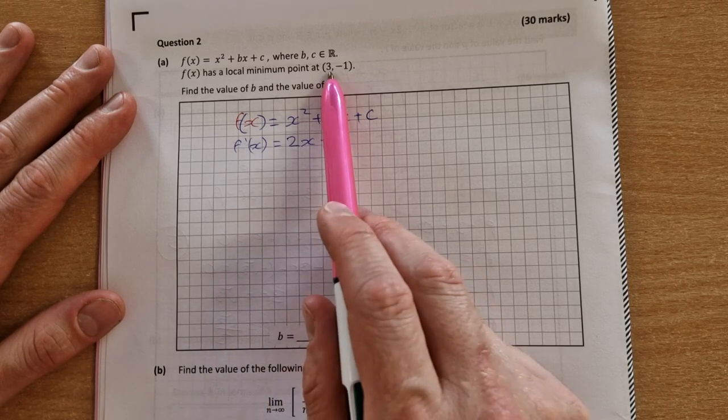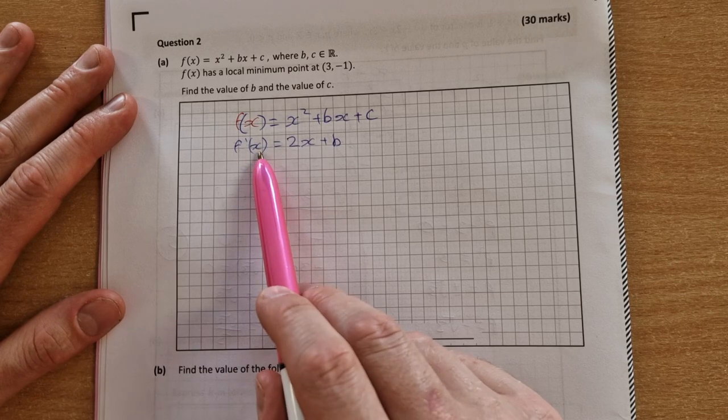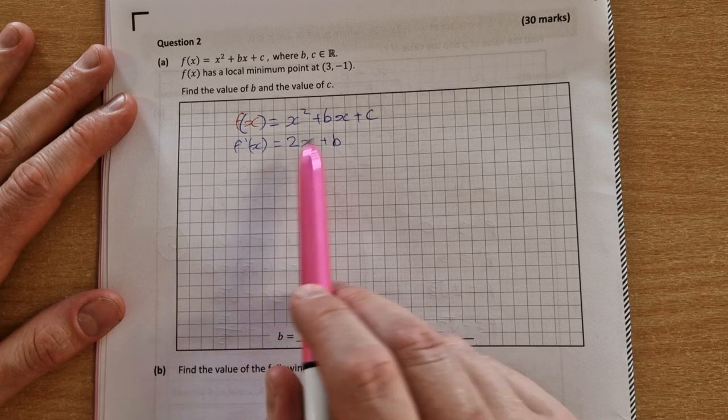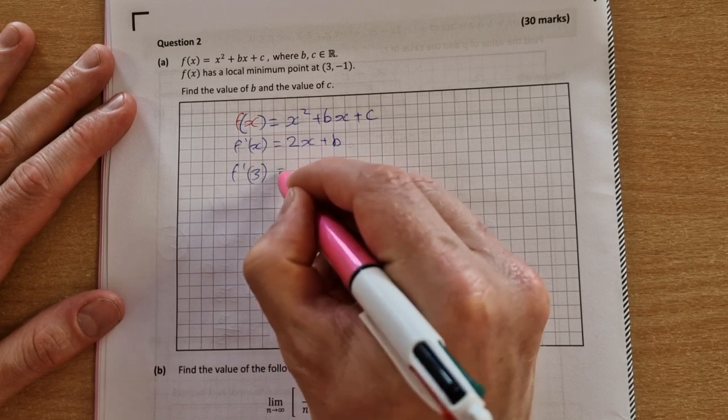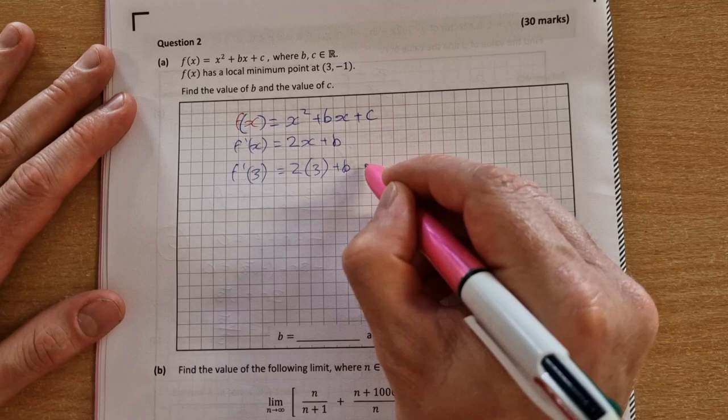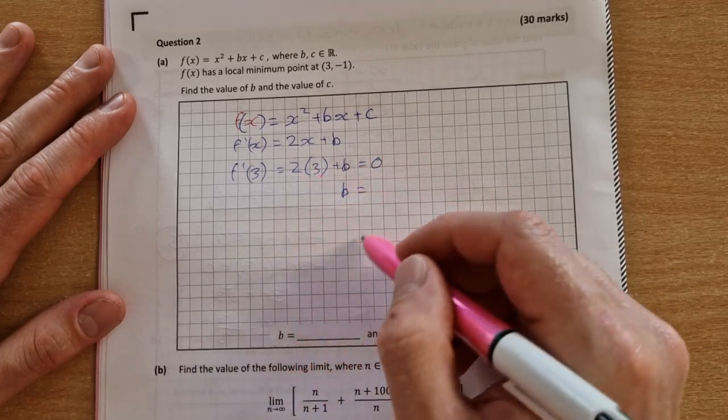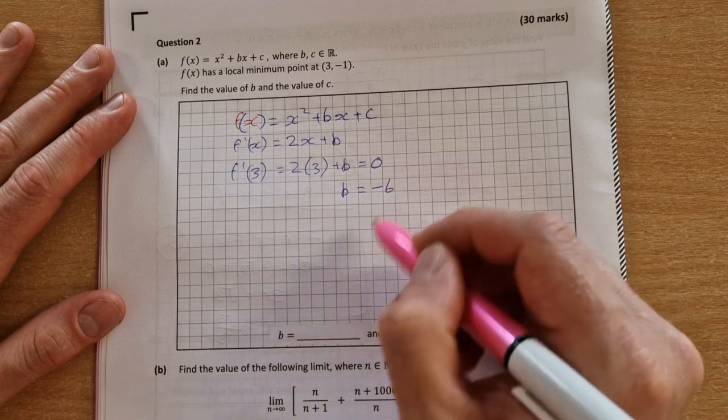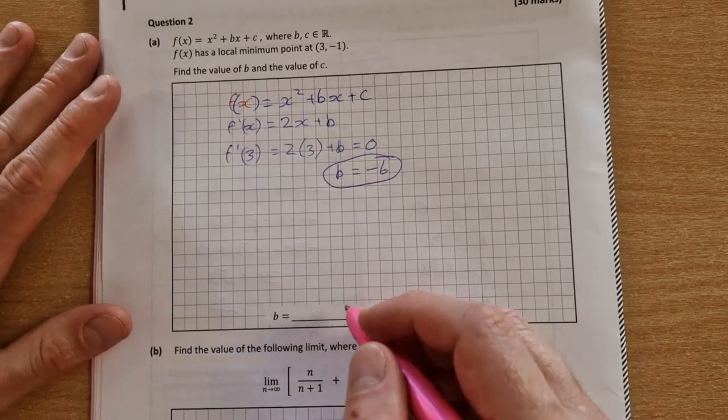If we have a local minimum at the point (3, -1), if we put 3 into the derivative it should equal 0. So f prime of 3 equals 2 times 3 plus b equals 0. That's b equals, 2 times 3 is 6, and over that side it'll be minus 6. So b equals minus 6.